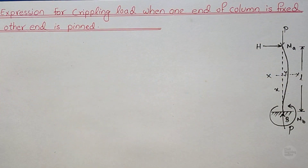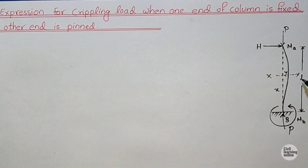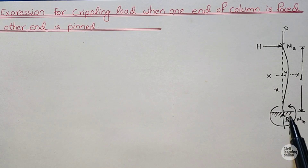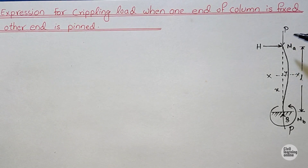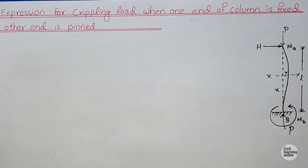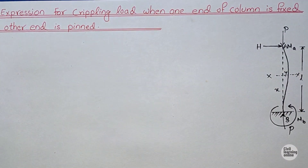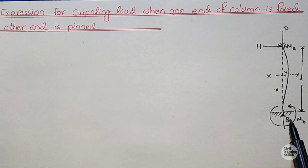Moving toward the derivation, here in the diagram I have shown a long column whose span is L. It has a fixed support at support B and the support A is a pinned or hinge support. At support A it is carrying a crippling load P, and the same amount of resisting force is also acting at support B. Due to this crippling load, moment MA is generated at support A, and horizontal reaction H also acts at support A. Since support B is a fixed support, moment MB is generated at support B.